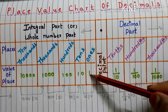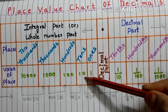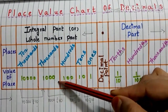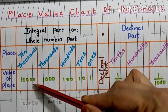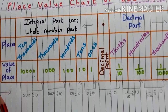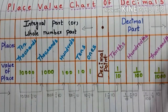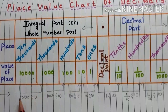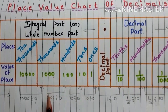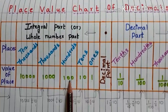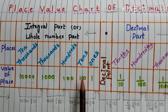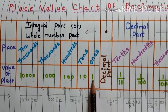1's place and the value is 1. 10's place and the value is 10. 100's place and the value is 100. 1000's place and the value is 1000. 10,000's place and the value is 10,000. One thing we can observe here: when we are moving from left to right, each time the value is decreased by 10 times. See here — 10,000 decreased by 10 times gives 1000, 1000 decreased by 10 times gives 100, 100 decreased by 10 times gives 10, and 10 decreased by 10 times gives 1.